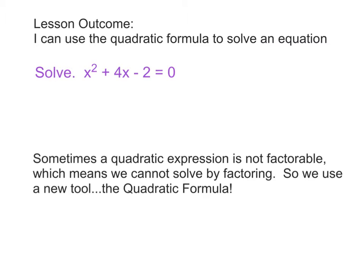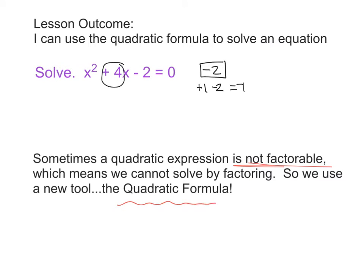We've been solving quadratic equations by factoring. Since the coefficient of x² is 1, we can factor using the c value — the factor pairs for negative 2 are negative 1 times 2. Adding these gives 1 or negative 1, but in no way could we ever get positive 4. That means this quadratic equation is not solvable by factoring, so we need a new tool: the quadratic formula.